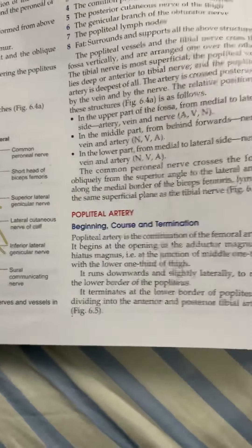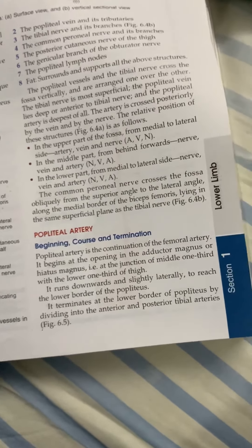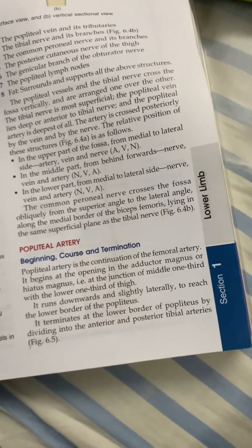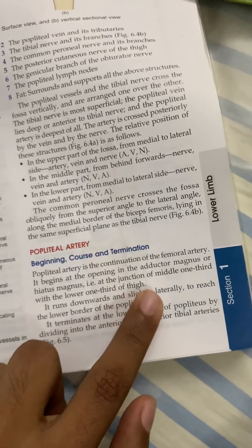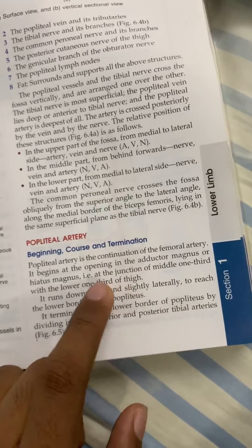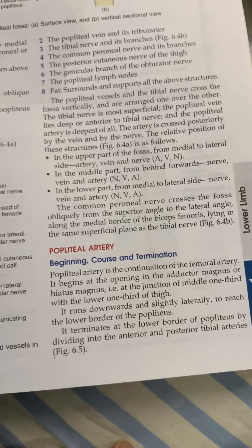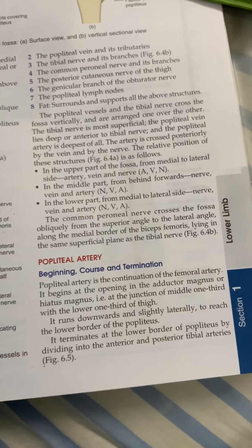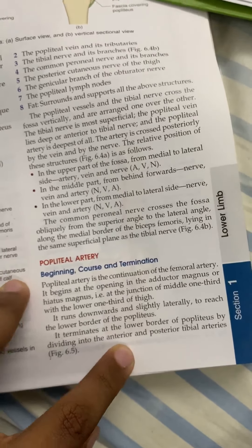The popliteal artery is the continuation of the femoral artery after it pierces the adductor hiatus, at the junction of the middle one-third and lower one-third of the thigh. It runs downwards and slightly laterally, reaches the lower border of the popliteus, and then divides into the anterior and posterior tibial arteries.